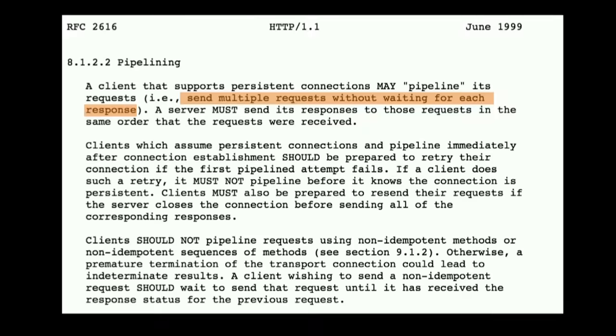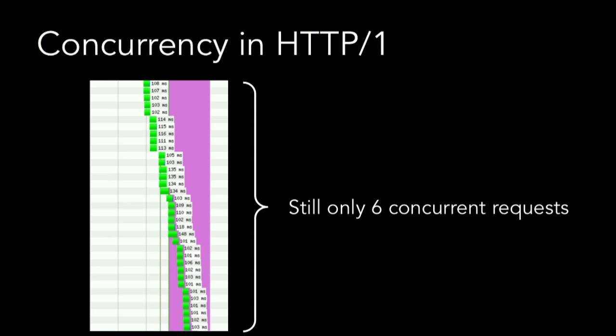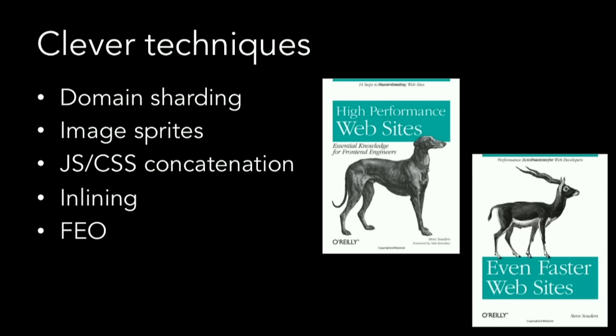So what we did is try to address it in the browser by opening multiple connections. Browsers open six connections per host — their attempt to do some concurrency and alleviate head-of-line blocking. That still wasn't good enough, so we came up with clever techniques like concatenation, consolidation, sprites, and inlining. An entire industry called FEO, or front-end optimization, was born out of addressing these inefficiencies.